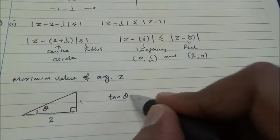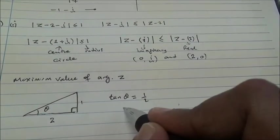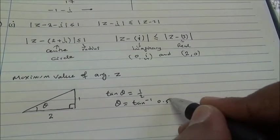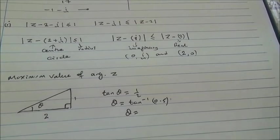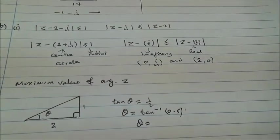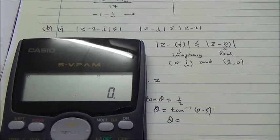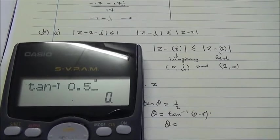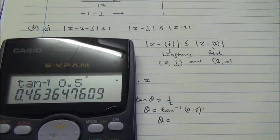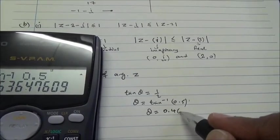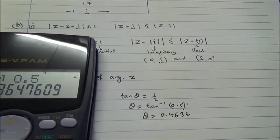Tan of theta is equal to half. Therefore, theta is equal to inverse of tan 0.5. Therefore, theta is gonna be inverse of tan 0.5, which is 0.4636.